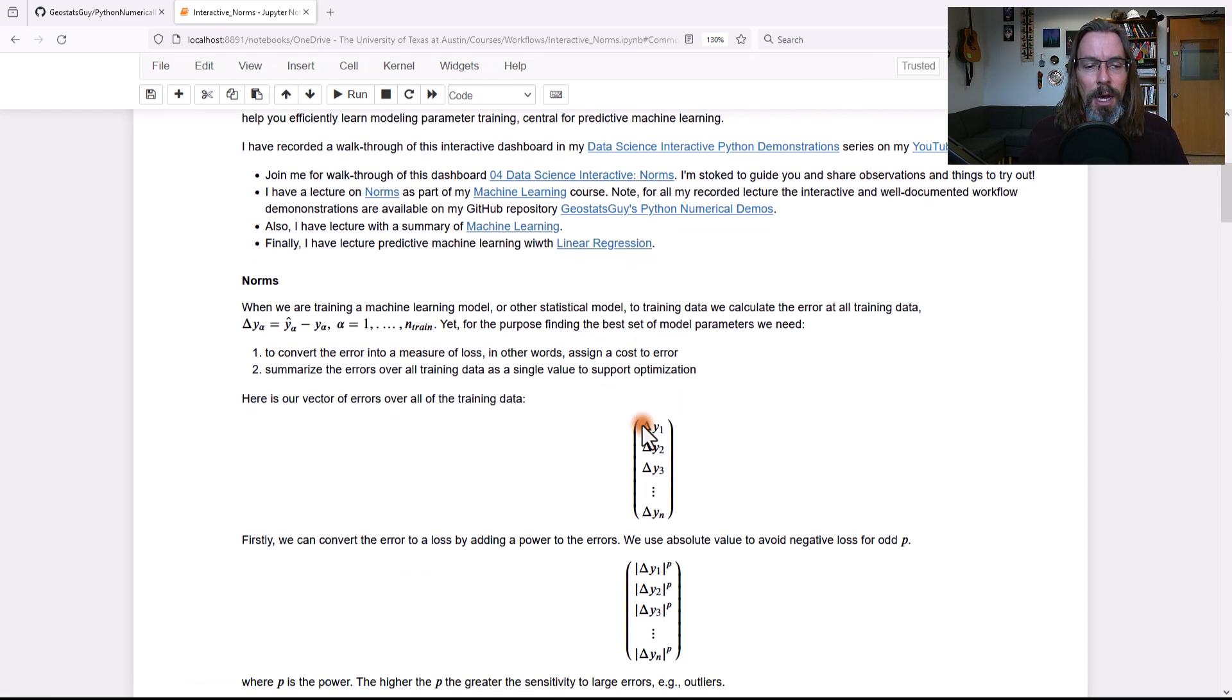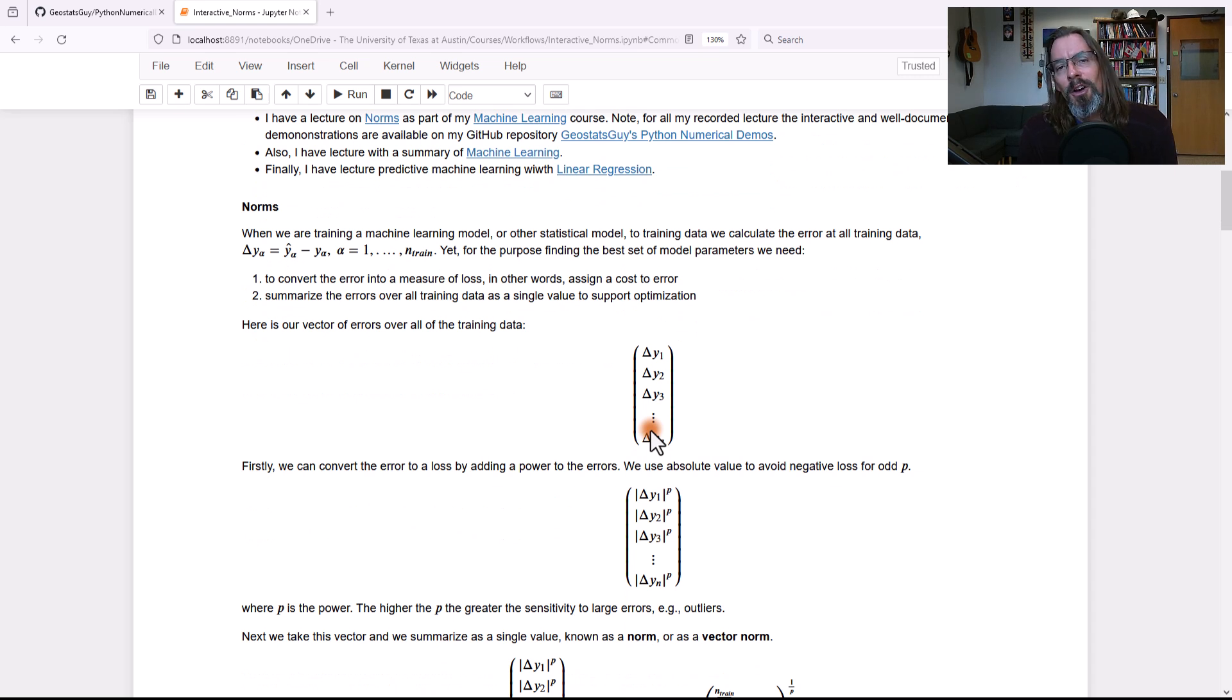All right. Let's dive into a couple of details about norms. What it comes down to is this: when you're fitting your machine learning model to data, your training data, you're going to have error. And that makes sense. In fact, it's part of the model. We expect that there's going to be error. And in fact, when we train our model parameters, we're typically trying to best fit the training data such that we minimize the error.